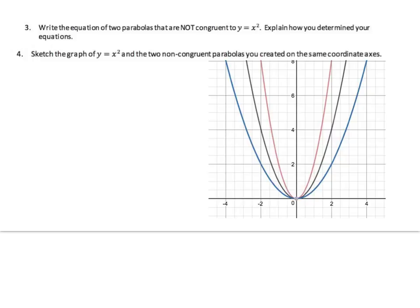The next exercise: write the equation of two parabolas that are not congruent to y equals x squared, and explain how you determined your equations. y equals x squared is our reference. If I put a number in front of the x squared, that sort of shrinks or stretches my parabola a bit.